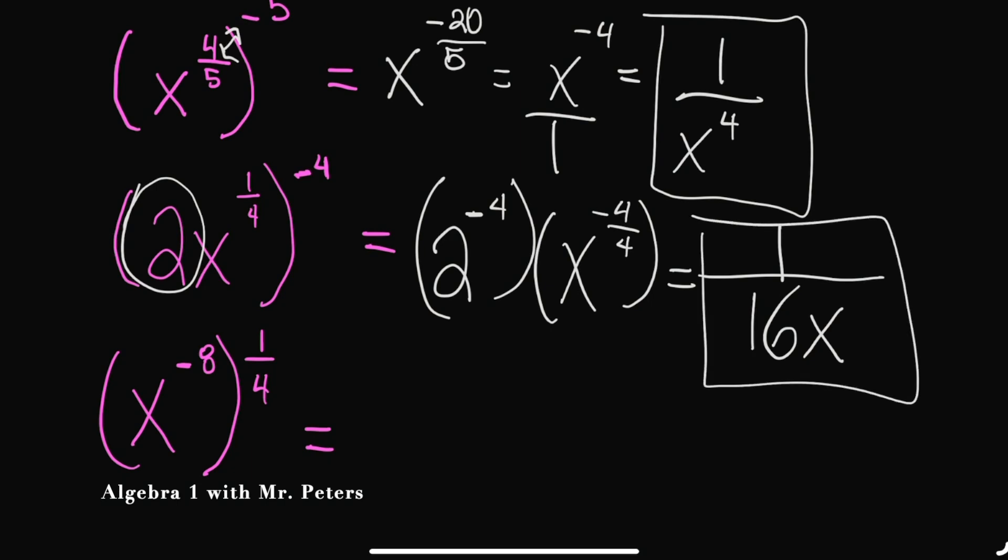So as we simplify this now, I'm going to have one over 16X. And the reason why two to negative fourth, once we flip it, all this would turn into one over two to the positive fourth power, which two to the fourth is 16. And once we simplify four over four to get negative one, we just take its reciprocal. So this is how we got to the answer one over 16X.